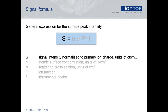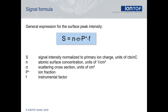Written in a formula, the signal normalized to the number of primary ions is a product of: the atomic surface concentration of the element; the scattering cross section, which depends on the primary ion mass, primary ion energy, and the element in the surface; the probability that a scattered primary ion remains ionized after the collision — this is significantly less than 1, meaning a large fraction of the scattered ions are lost to neutralization; and an instrumental factor which includes analyzer transmission and detector efficiency. As all these factors are constant for given experimental conditions, the signal S is directly proportional to the atomic concentration N. Thus, we have a quantitative analytical technique.